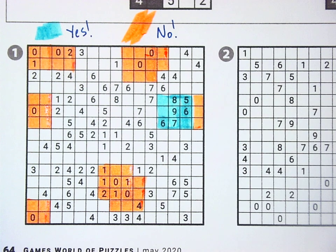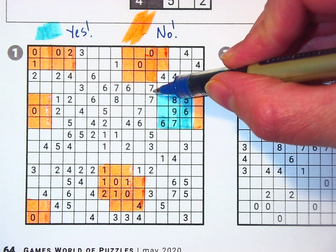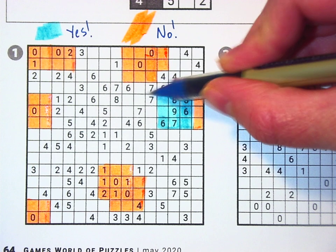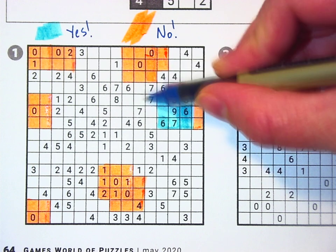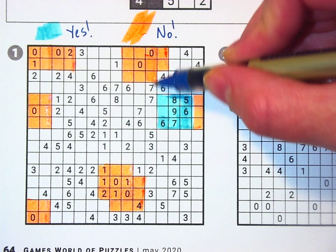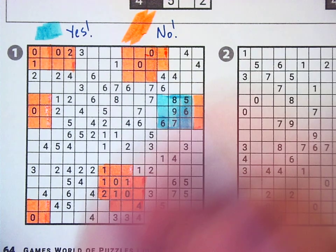And then the next one we have is this seven right here. Do you see how this seven right now has one yes and then two no? But since the total number of squares around it is nine, that means that these two being no mean that the rest are yeses. So that's a yes.